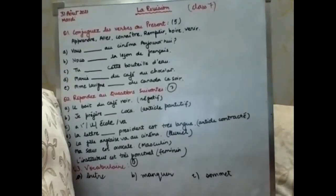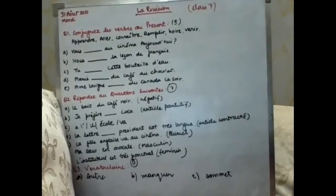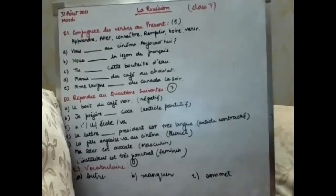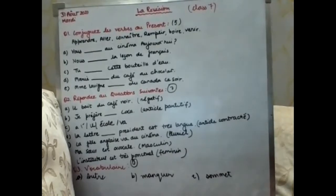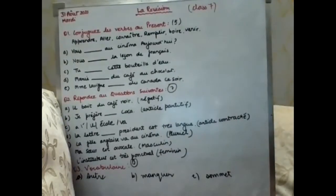Revision chapter number one, question number one: conjugate the verbs. Following are the five parts which you have to do for this question. I'm not going to explain because this is your test. Question number two: change it according to whatever is given in the bracket. There are seven parts and each part contains one mark each.